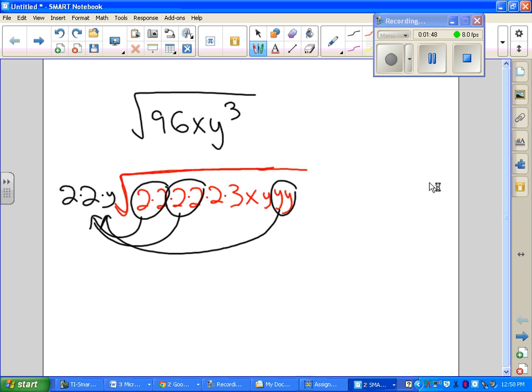I multiply that. 2 times 2 is 4, and a y. So I have 4y on the outside, and the inside, whatever I didn't circle or weren't in pairs, I'm going to put back inside. 2 times 3 is 6.